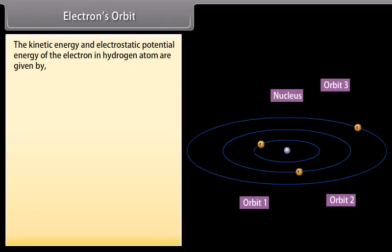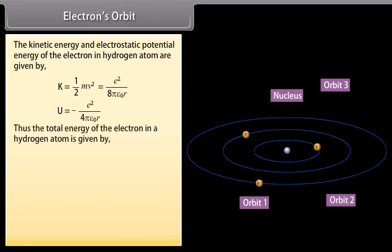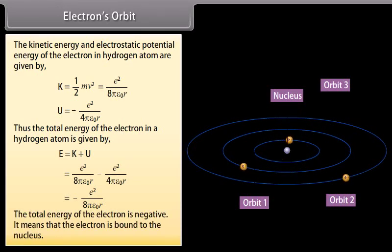The kinetic energy and electrostatic potential energy of the electron in hydrogen atom are given by K = ½mv² which equals e²/(8πε₀r) and U = -e²/(4πε₀r). Thus the total energy of the electron in a hydrogen atom is given by E = K + U which is equal to -e²/(8πε₀r). The total energy of the electron is negative. It means that the electron is bound to the nucleus.